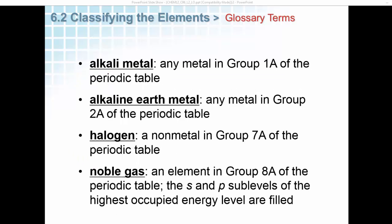Alkali metals are any metal in Group 1A of the periodic table. Alkaline earth metals are any metal in Group 2A of the periodic table. Halogens are nonmetals in Group 7A of the periodic table.